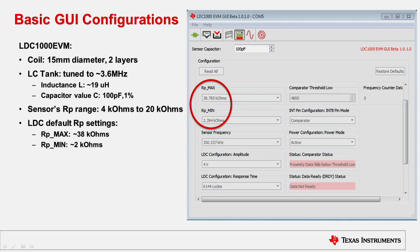On the GUI, when you first open it up, I'd like to go over some default parameters and why they're there. The coil that's mounted on the EVM is a 15-millimeter diameter coil with two layers. The LC tank is tuned to a 3.6 MHz frequency, with the inductance of the coil when no target is present is around 19 micro-Henry. And the capacitor value that's chosen accordingly is 100 picofarad.